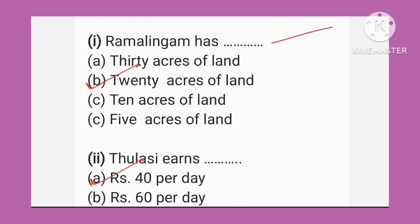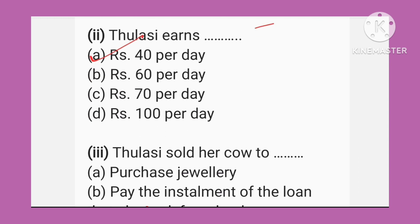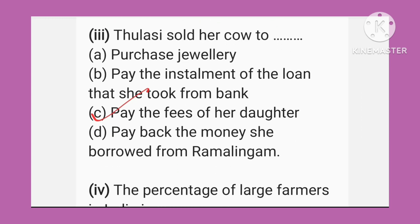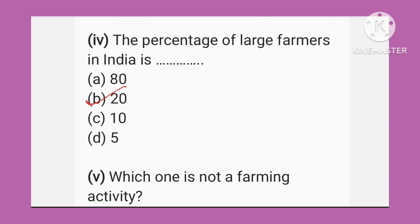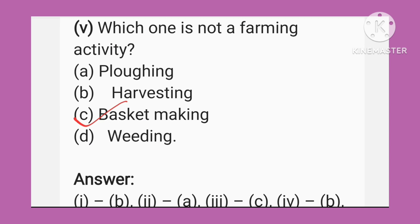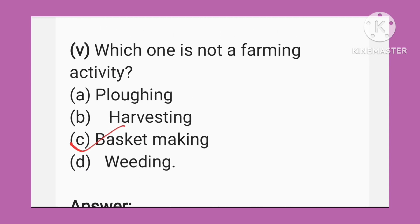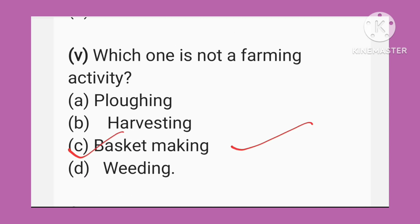Ab kuch MCQ dekhte hain. Ramalingam ke paas hai 20 acres of land. Tulsi 40 rupaye per day kamaati hai. Tulsi ne apni cow bech di apni beti ki fees dene ke liye. Large farmers ki percentage in India mein 20 percent hai. Which one is not a farming activity? Basket making — yani ki basket banana — kheti se jura kaam nahi hai.